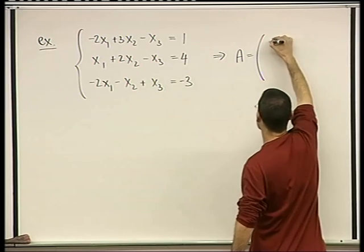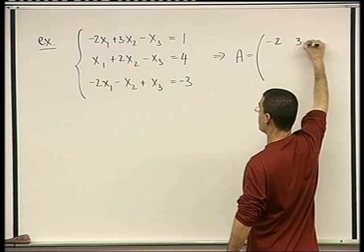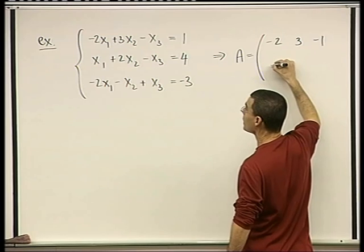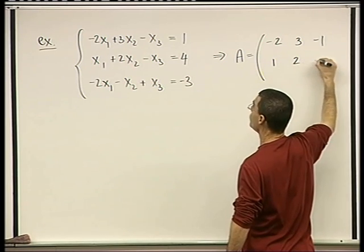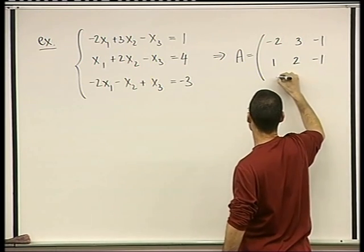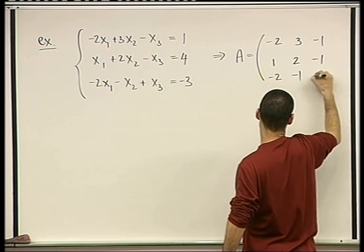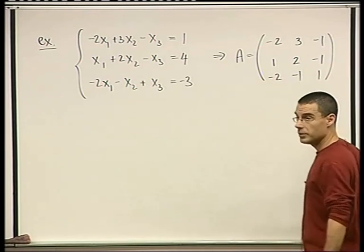So what is A, the coefficient matrix here, is negative 2, 3, negative 1, 1, 2, negative 1, negative 2, negative 1, 1. This is A.